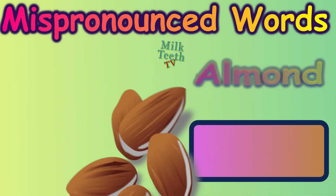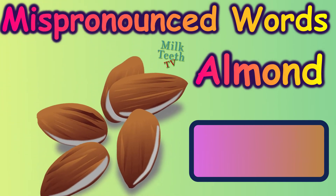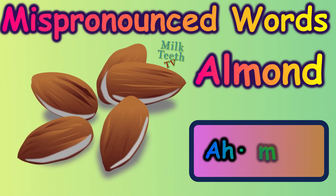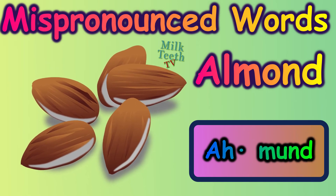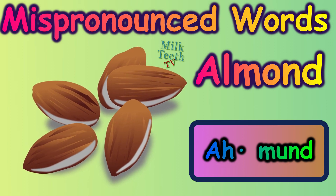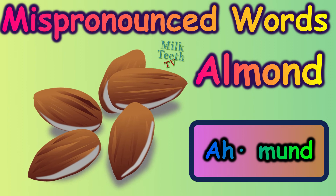And how do we go about pronouncing this? It's almond — simply almond. Many times we pronounce this as almond, but we have to mute the L. We say almond. Say it once more: almond.